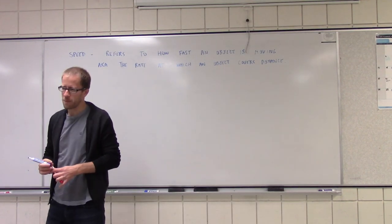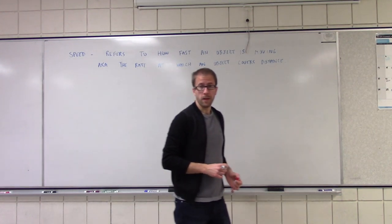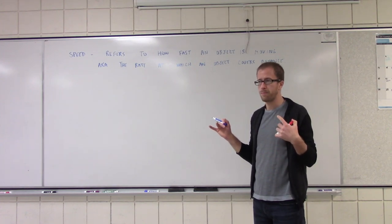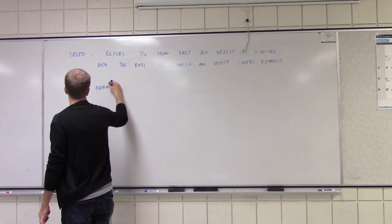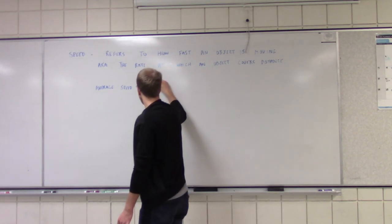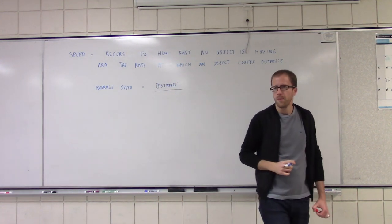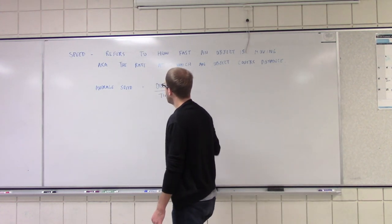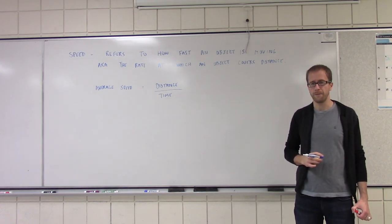Now, we're not going to be using a lot of formulas for this first little bit in physics. However, it is important that you do know the formula. So when we're talking about speed, if we ever want to find our speed over some period of time, we can find our average speed by taking our distance covered and dividing it by the time it took to cover that distance.